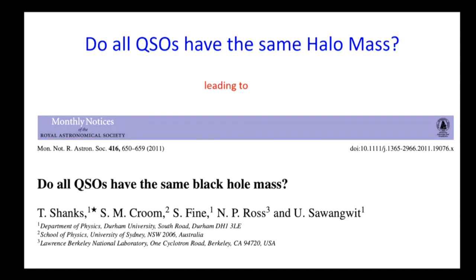If all quasars roughly have the same halo mass, that leads to something we noticed some time ago: there's a correlation between halo mass and central black hole mass in galaxies, raising the question of whether all quasars have roughly the same black hole mass. James Edd, an expert on this, used to disagree and claimed it was a selection effect, but we disagree — a discussion for another day.